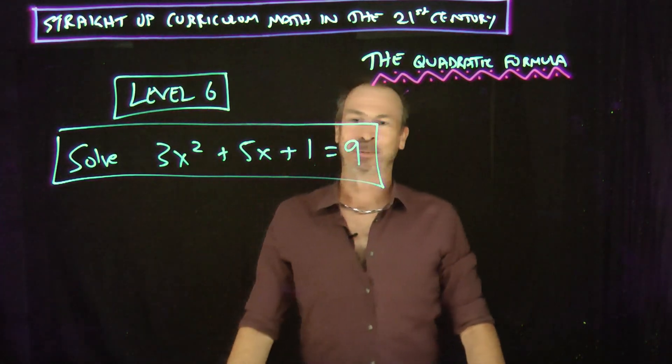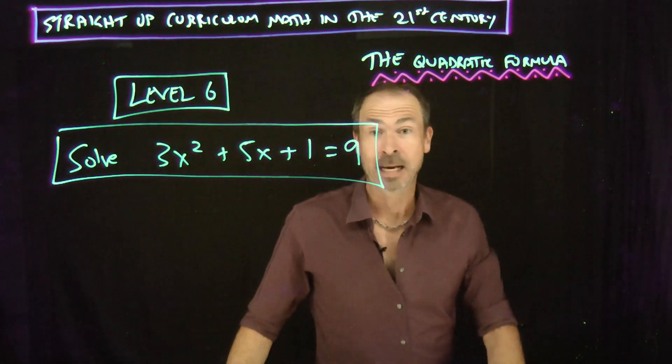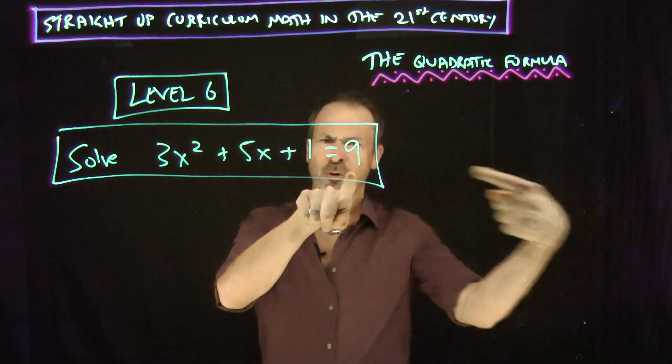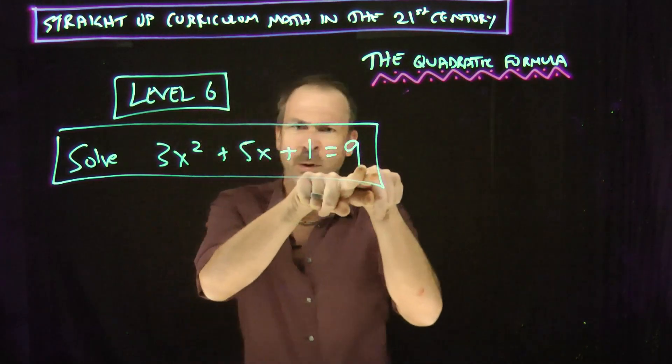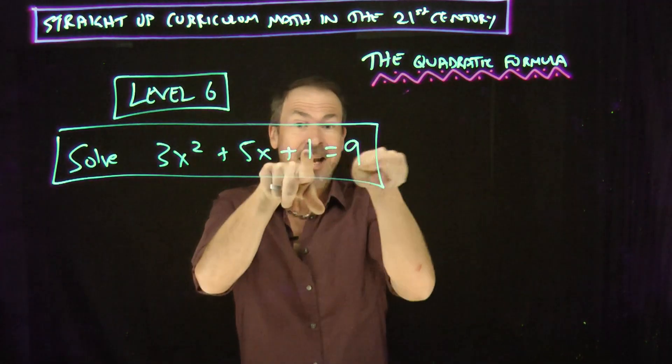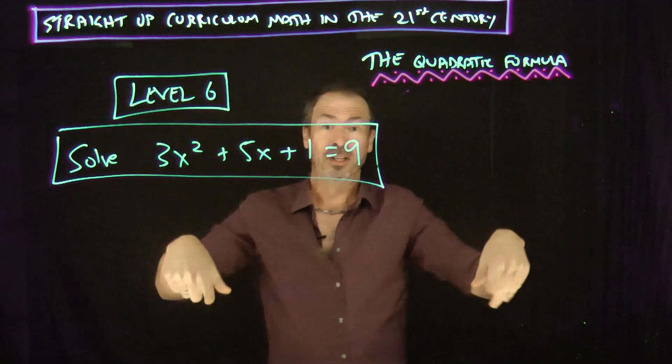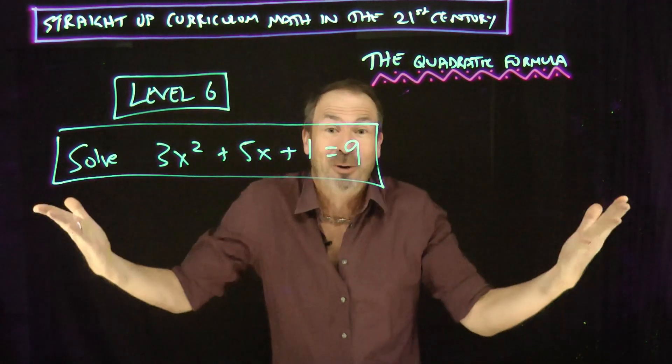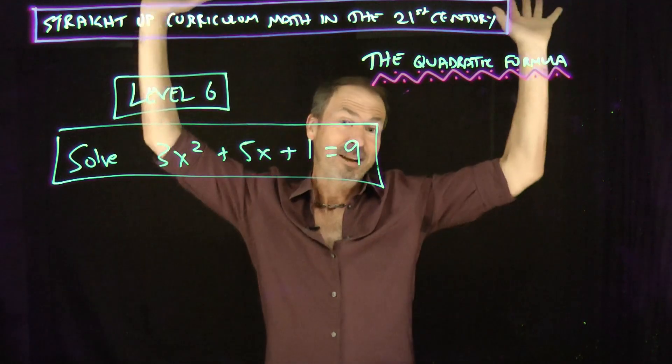Let's solve 3x squared plus 5x plus 1 equals 9. Now, most curriculum people will probably object to the fact that I have equals 9. They say, subtract 9 from both sides. Get 0 on the right. I don't! Because I know I'm probably going to change this number and add things to both sides. I'm going to change this later on, so why change things now?